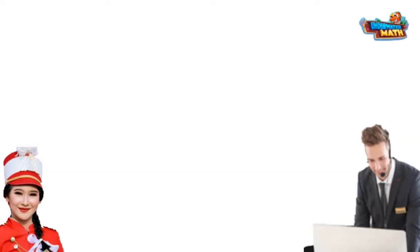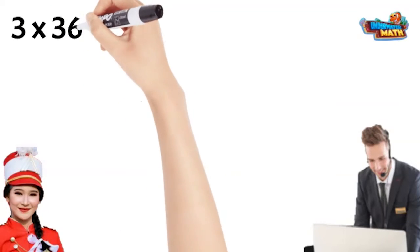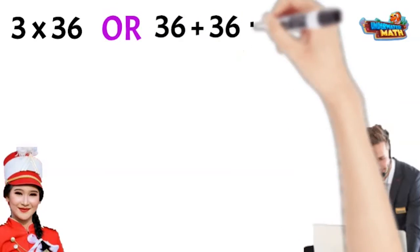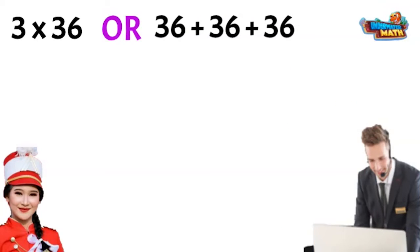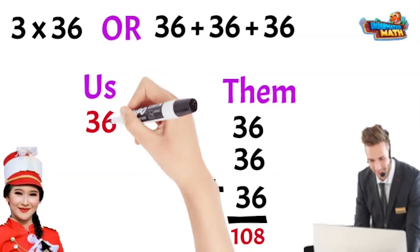Wow, if I wrote that as a math problem it would look like this. It means compared to our school, they have three times as many members, or three times 36, or 36 plus 36 plus 36. In total they have 108 members compared to our membership of 36. That sure is a lot more rows of band members they have to make.